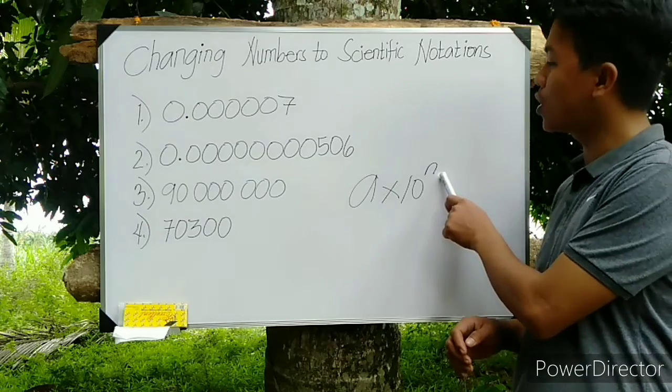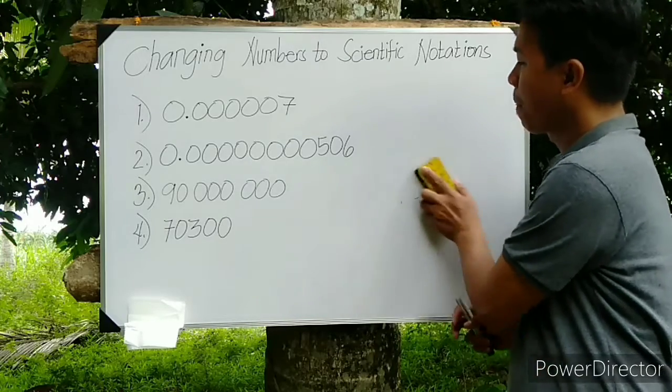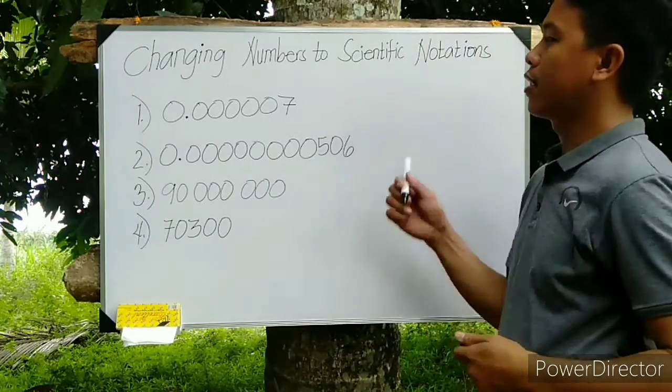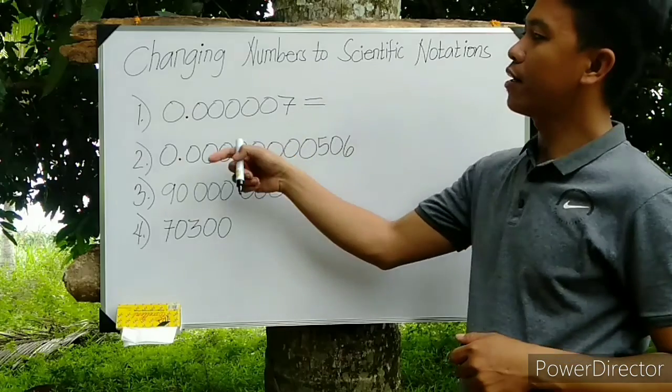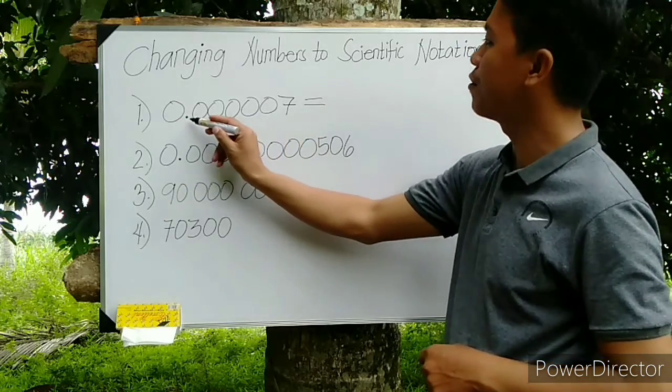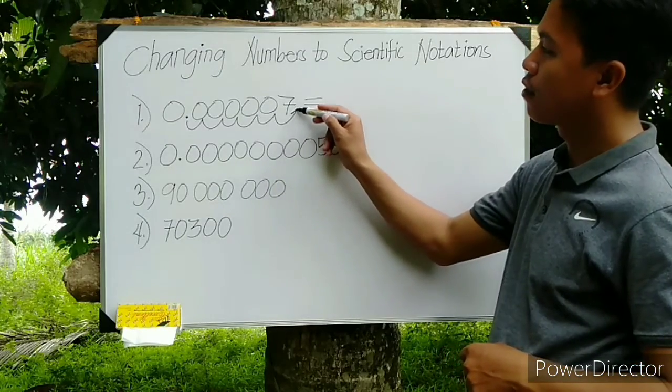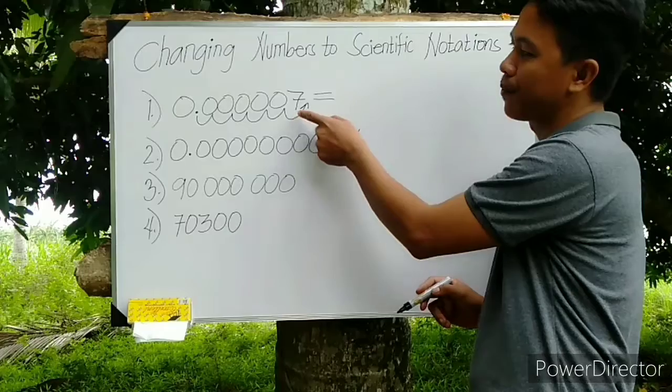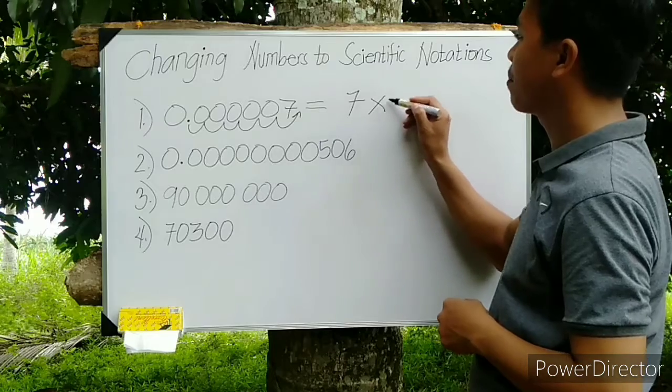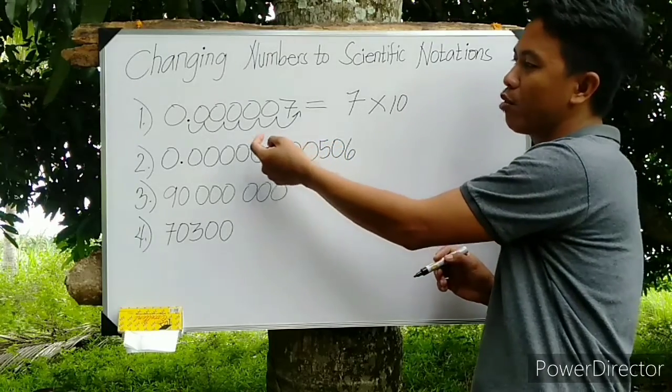So now let's go to number 1. The question is, how are we going to convert that into scientific notation form? So let's start here from the decimal, and our movement is from left to right. Let's move: 1, 2, 3, 4, 5, 6. We will end here after 7, because the value of A is equal to 7 times 10 to the power of—